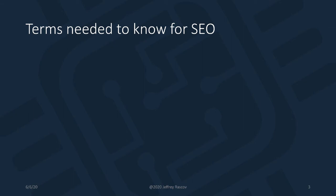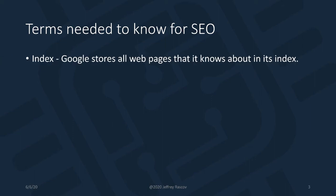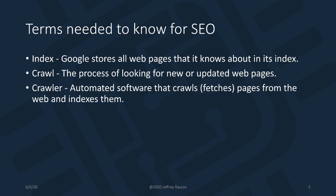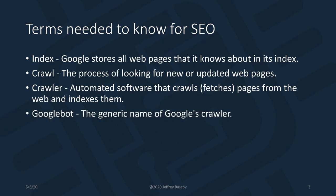Some of the terms we need to know before you start an SEO. First off is the index — it's what Google describes as a database of all the websites it knows of. To find websites, Google uses something called a crawler. The crawler is software that crawls the internet, fetches pages from the web, and stores them in the index. Google calls their crawler Googlebot.